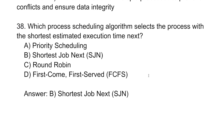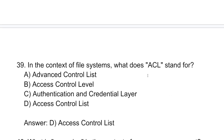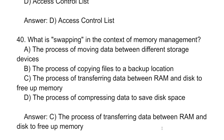Which process scheduling algorithm selects the process with the shortest estimated execution time? In the context of the file system, what does ACL stand for? ACL stands for Access Control List. What is swapping in memory management? Swapping is the process of transferring data between RAM and disk to free up memory.